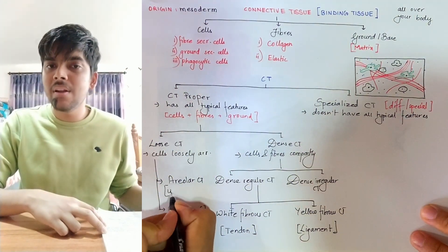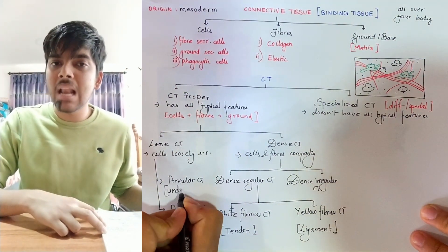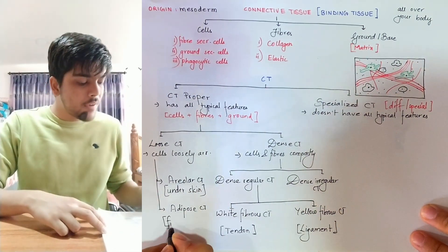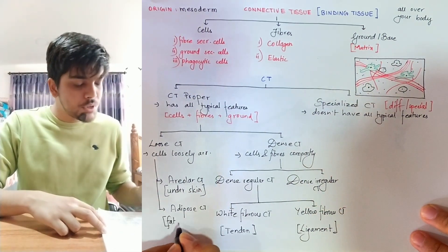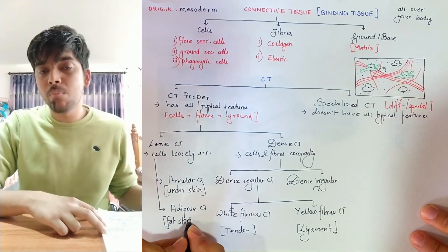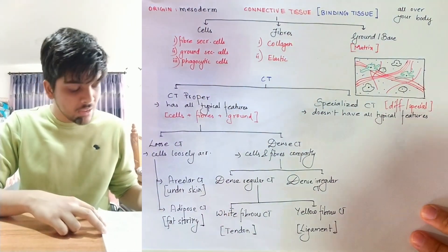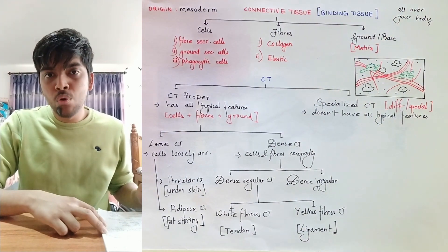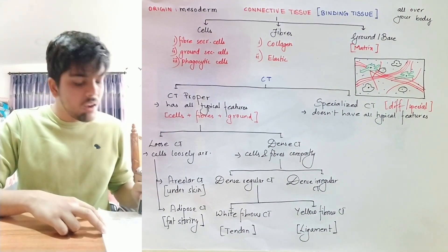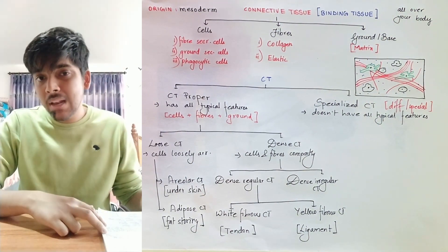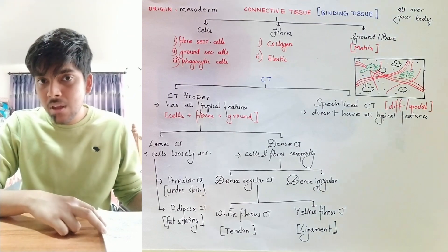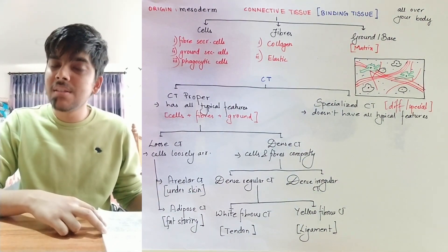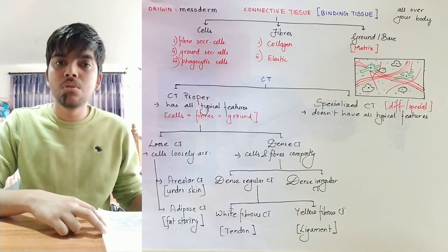White fibrous connective tissue is found in tendons, where it provides tensile strength. Tendons connect bones to muscles. Yellow fibrous connective tissue is found in ligaments, which provides elasticity, and ligaments connect bones to bones.